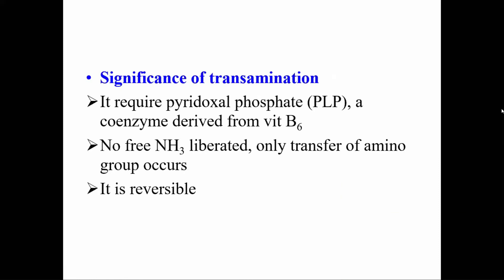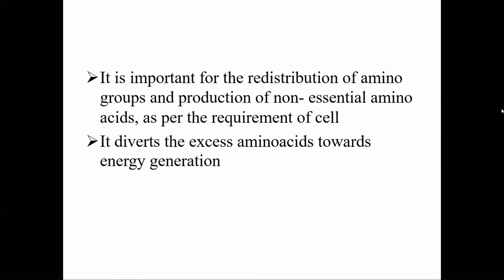Increased concentrations of these enzymes in serum indicate cytotoxicity and are helpful in the diagnosis of liver cirrhosis and heart disease. Now the significance of transamination: these reactions require pyridoxal phosphate as a coenzyme. During transamination, no free ammonia is liberated — only transfer of the amino group from one amino acid to the next keto acid occurs, and the reaction is reversible.